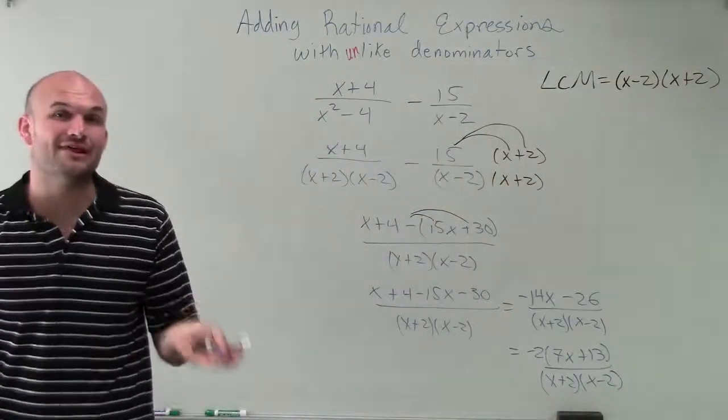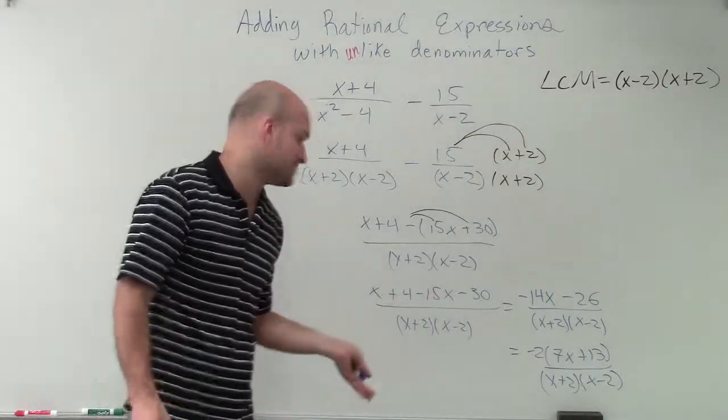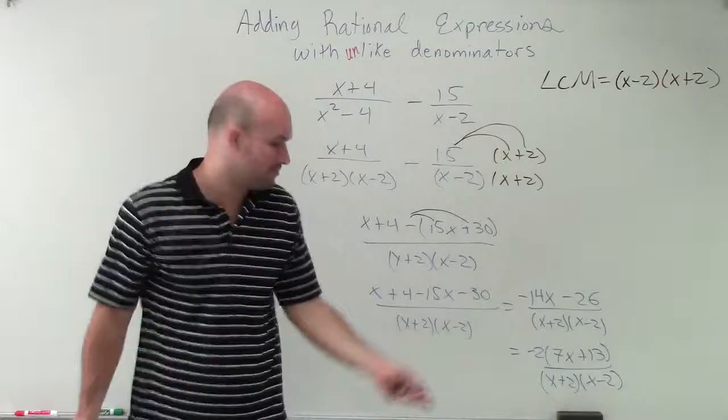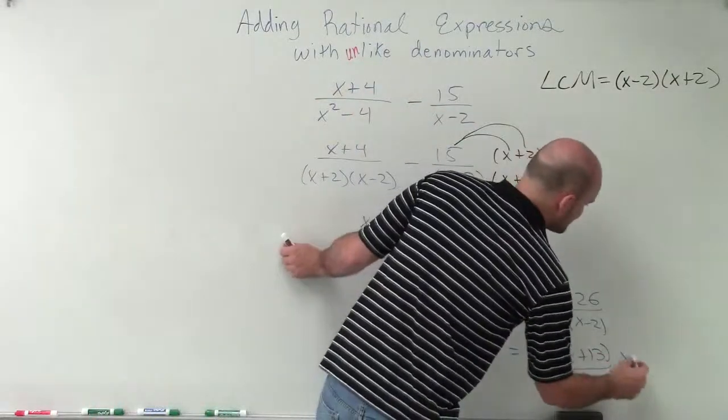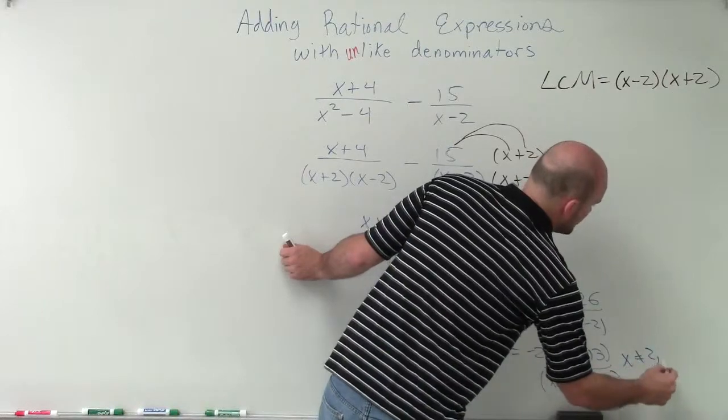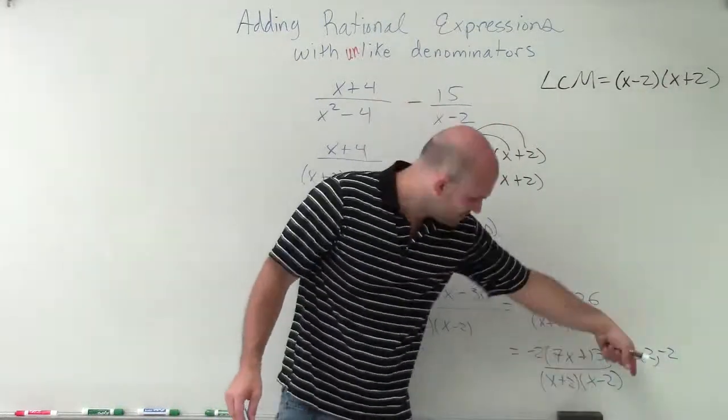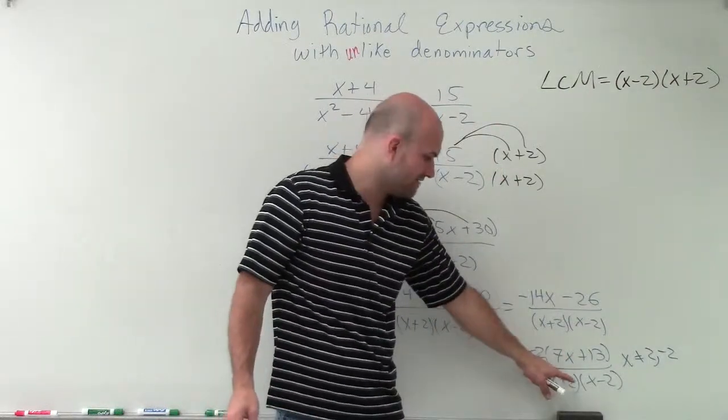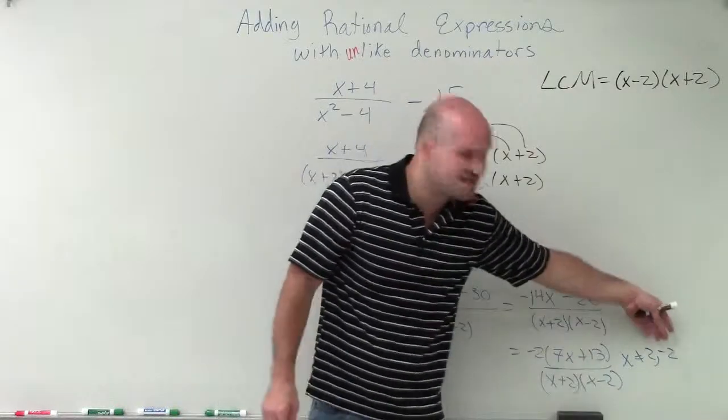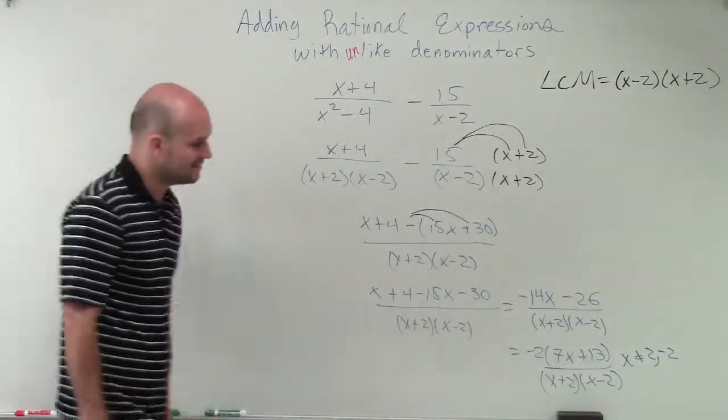Now again, I want to see what values are going to make my denominator equal to 0. Those are going to be my restrictions, right? Now I could set these both equal 0, but I know by applying the zero product property that my x cannot equal 2 or negative 2. Because if it equals 2 here, I get 0. 0 times anything is going to be 0. If it equals negative 2 here, I'll have 0. 0 times anything is going to be 0. So my two values that x cannot be are going to be 2 and negative 2.